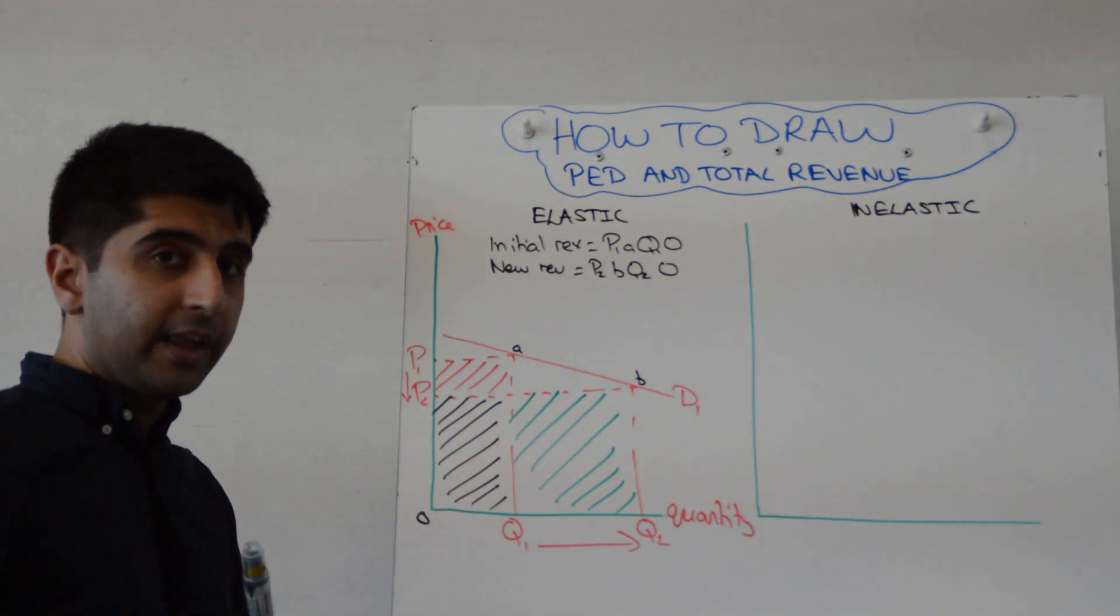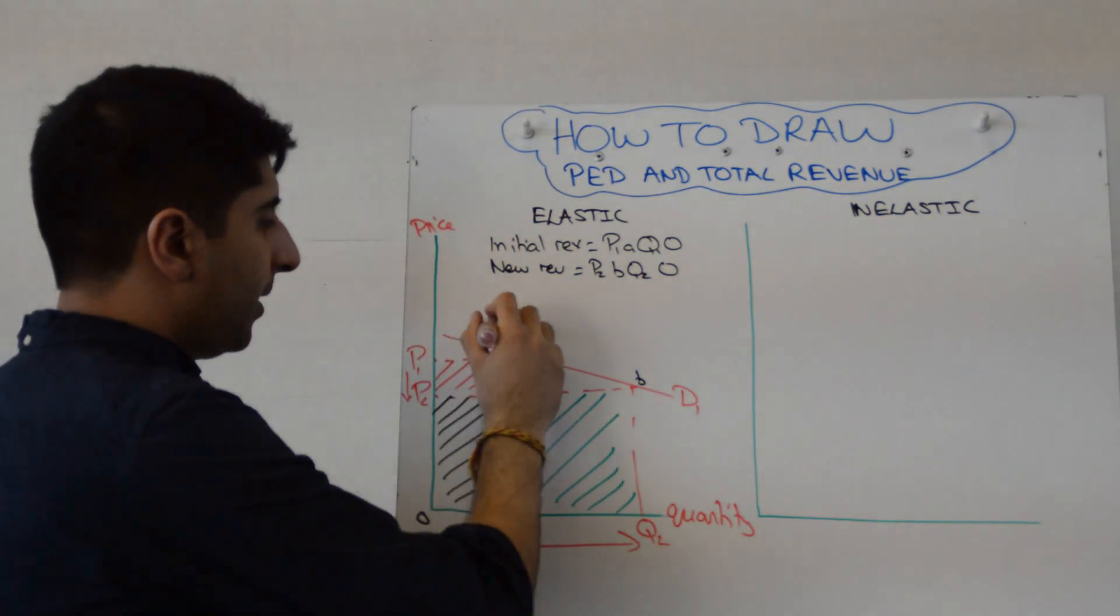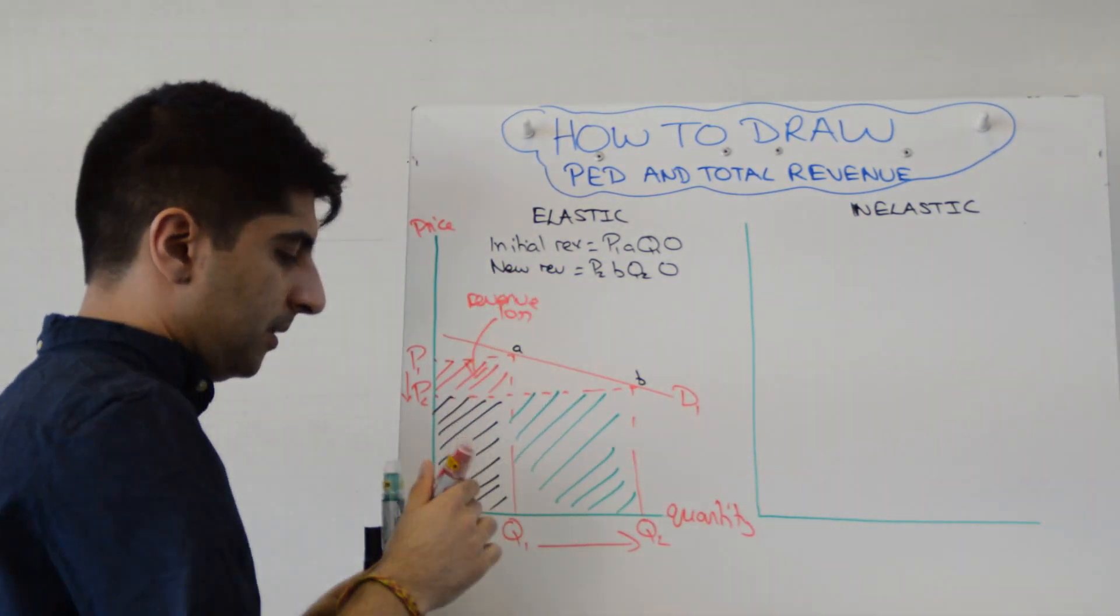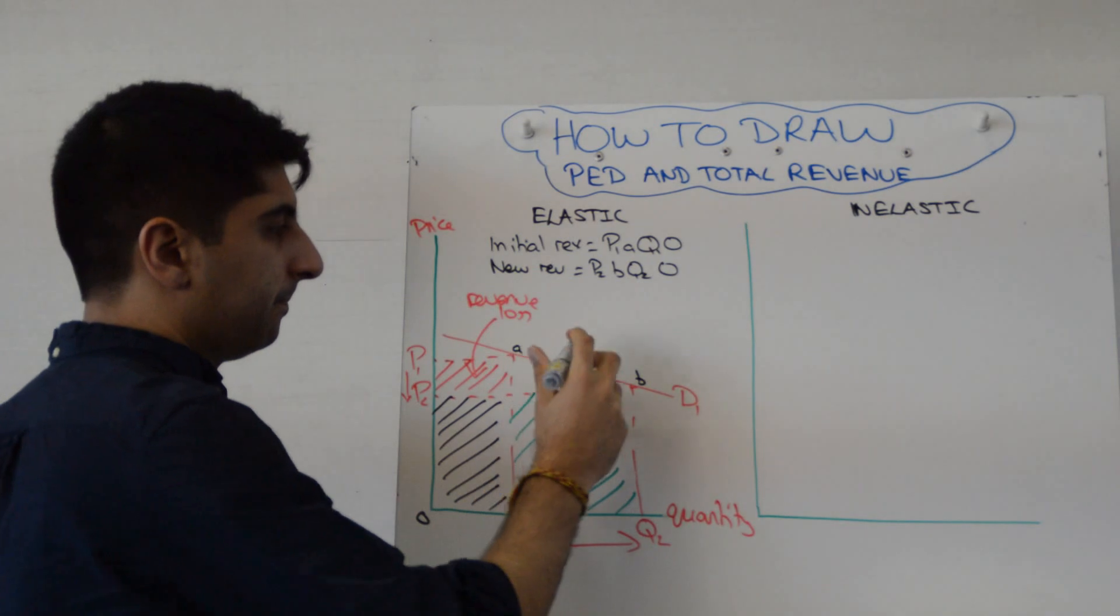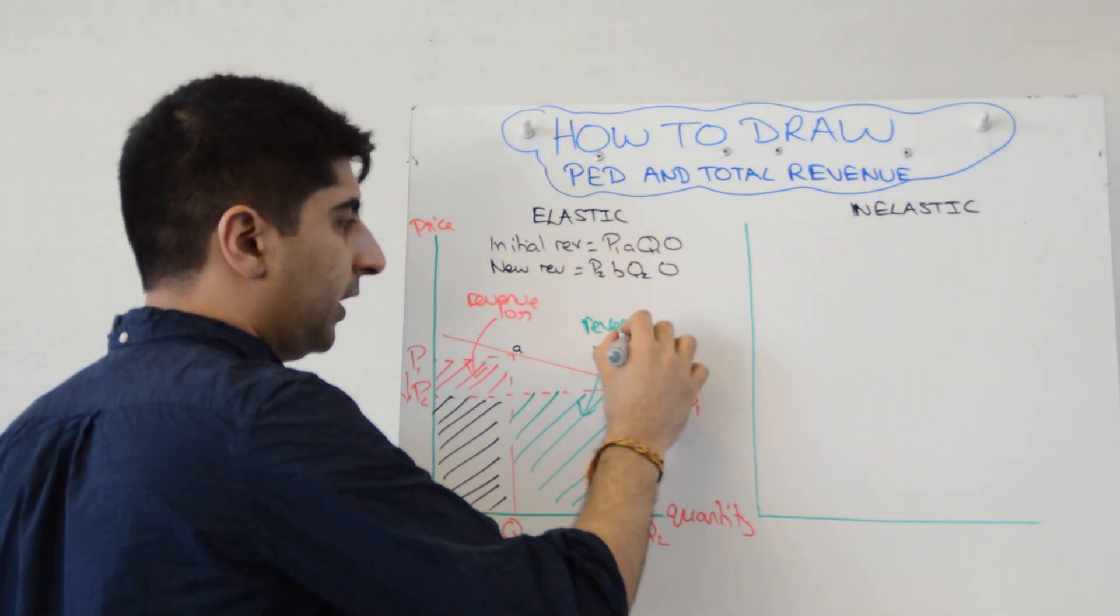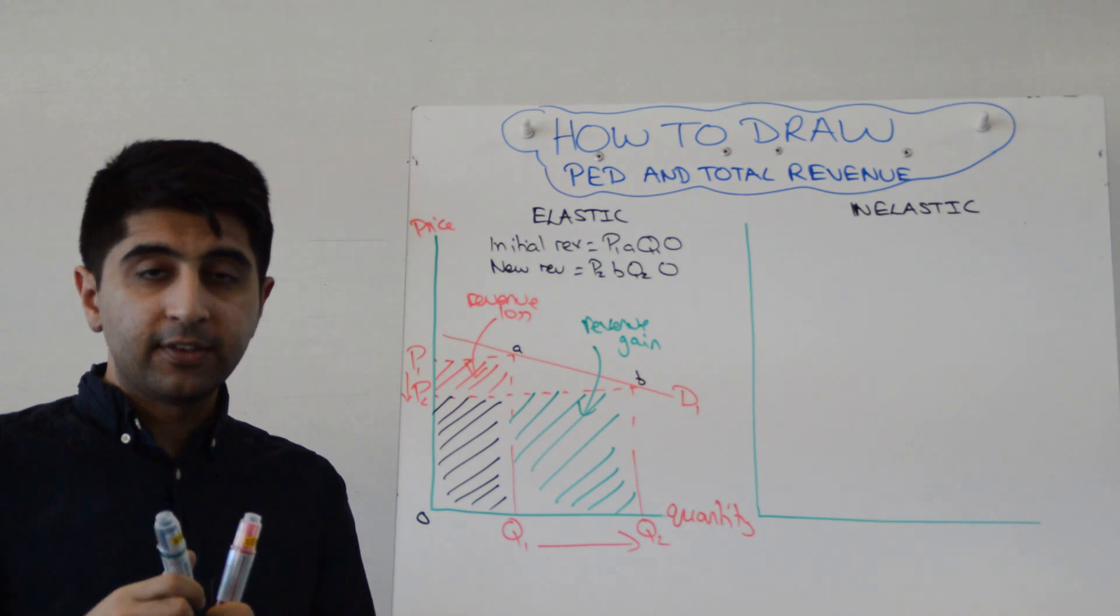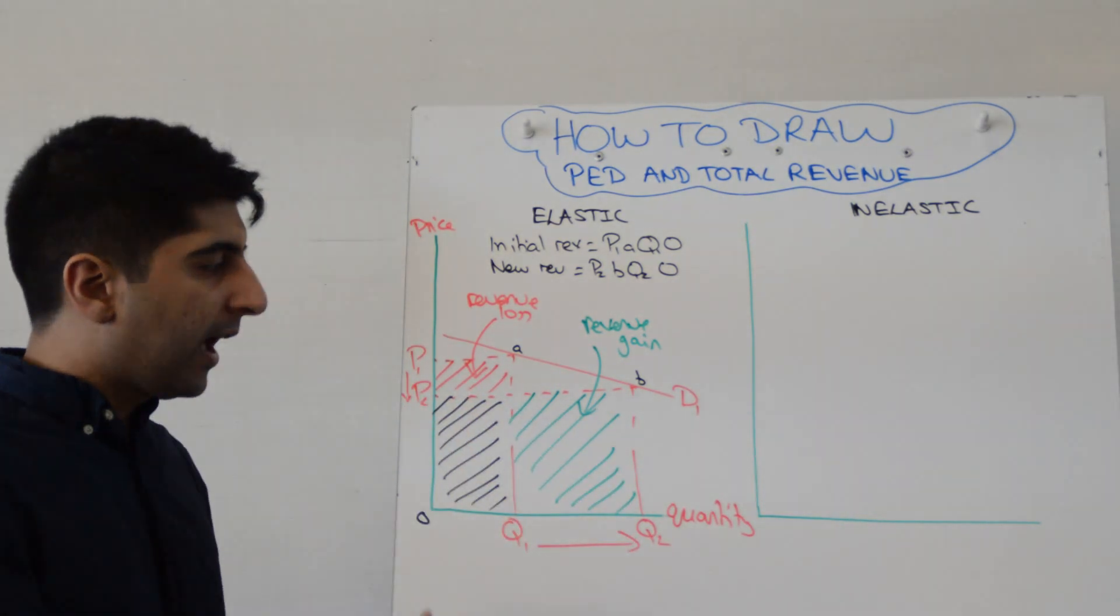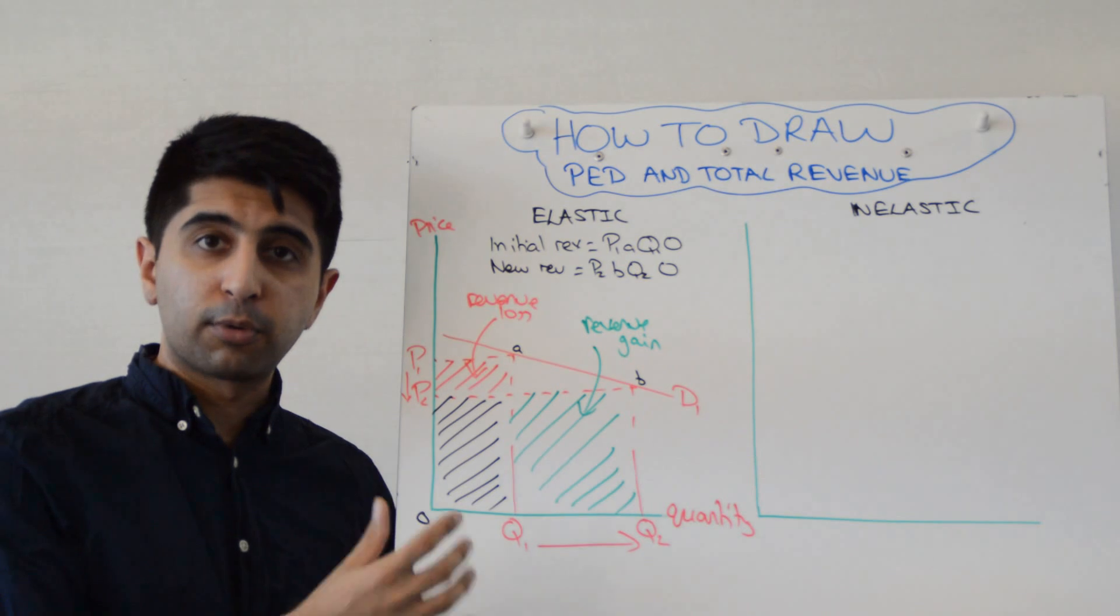All right, and you will then label this red bit as revenue loss. But this green bit as the revenue gain. And quite clearly this diagram shows that the revenue gain is much bigger than the revenue loss as a result of a price reduction when there is price elastic demand. Happy days.